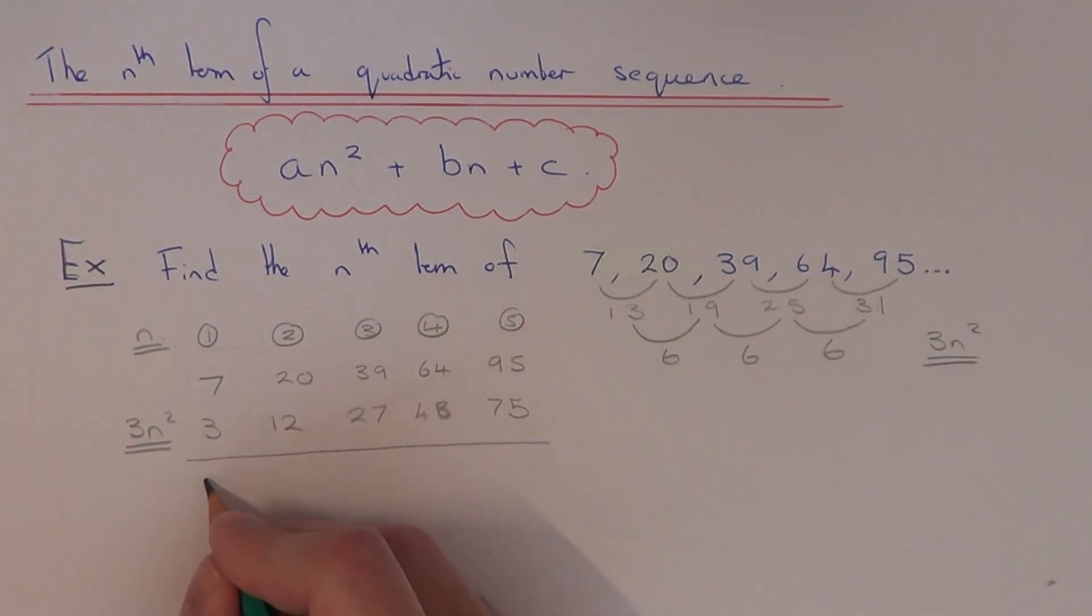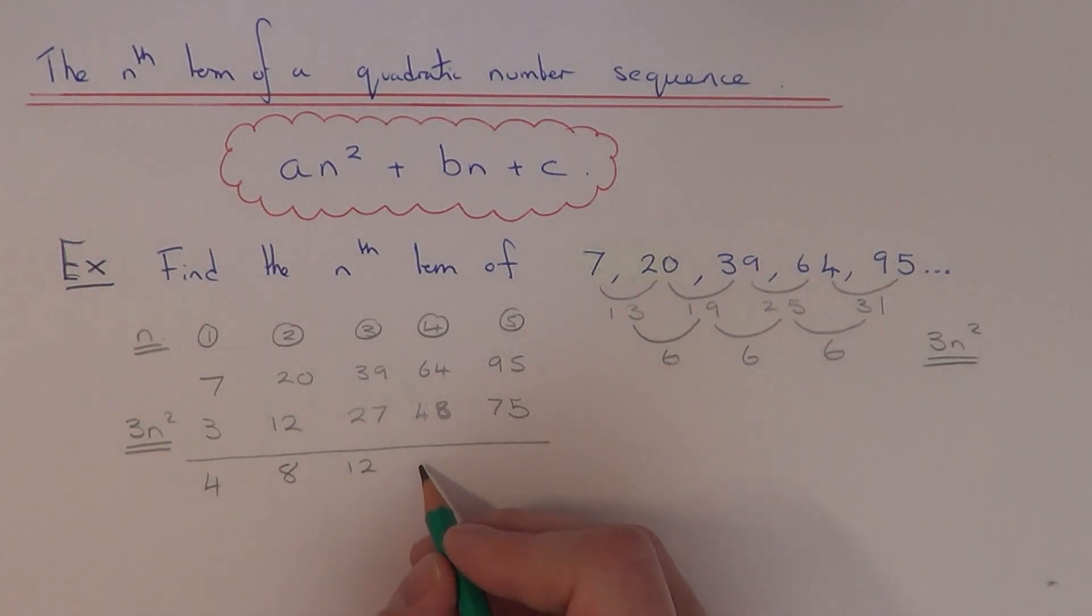So 7 take away 3 is 4. 20 take away 12 is 8. 39 take away 27 is 12. 64 take away 48 is going to be 16. And 95 take away 75 is 20.